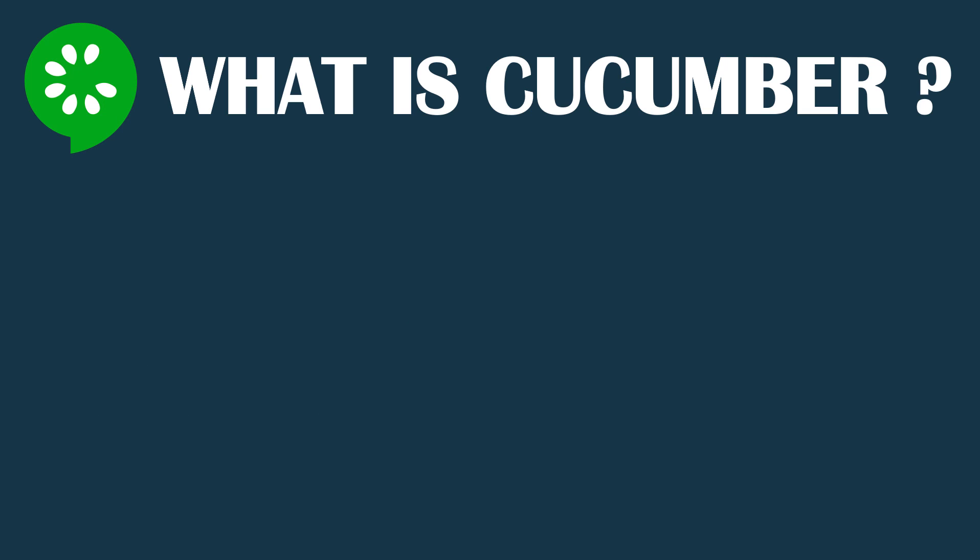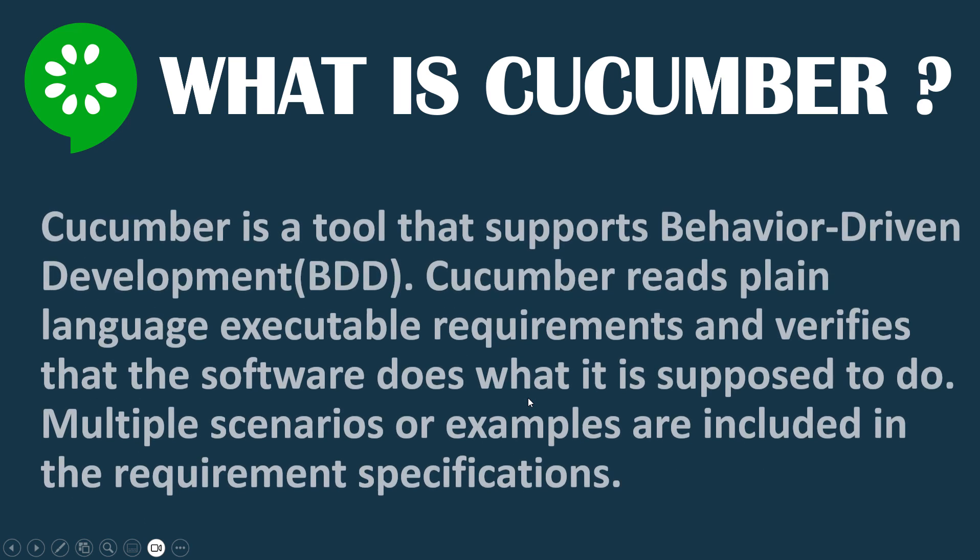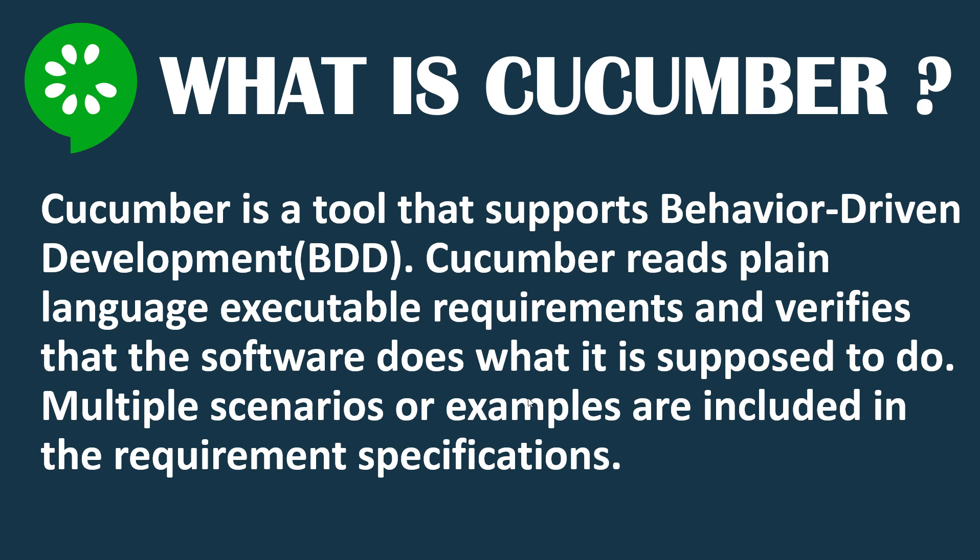Cucumber is very popular especially when talking about automation testing. Cucumber is a tool that supports Behavior Driven Development, commonly known as BDD. BDD is where you define the behavior of the application and drive your development based on that behavior. Simply put, Cucumber reads plain language executable requirements and verifies them against the software. You can write multiple scenarios and examples in your requirement specification file.